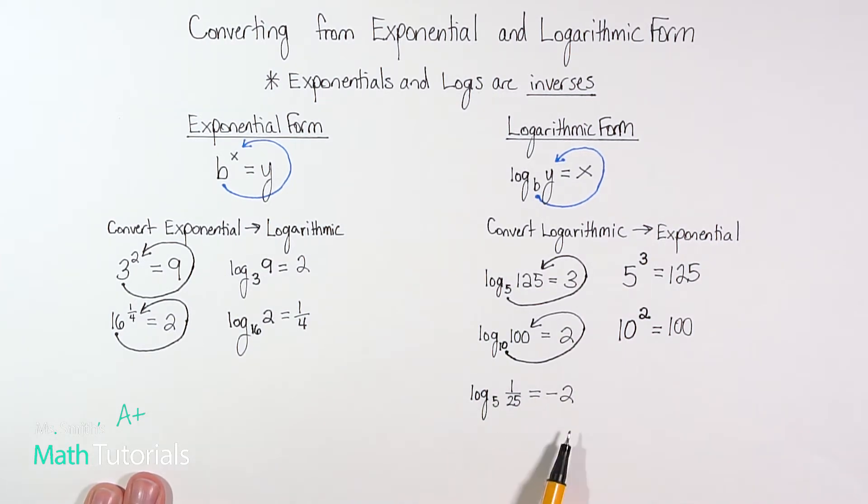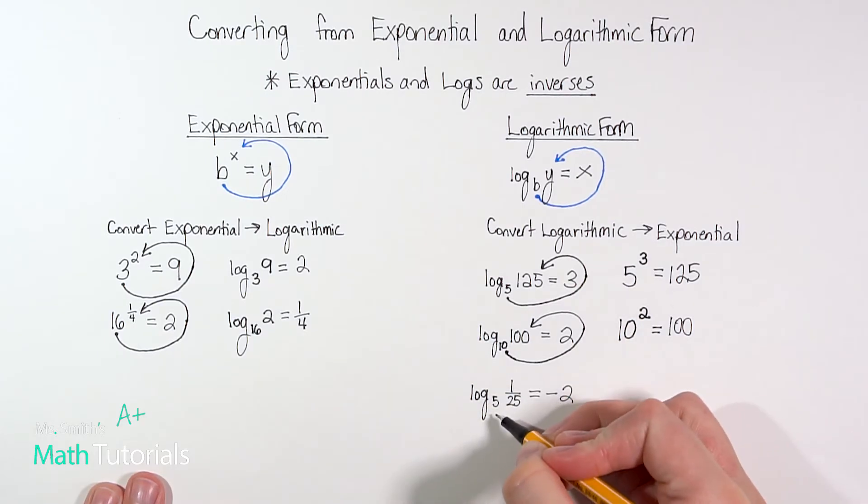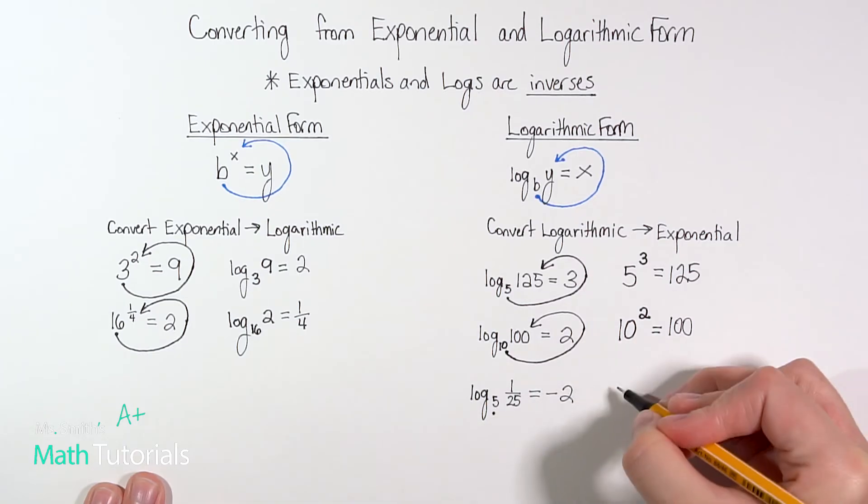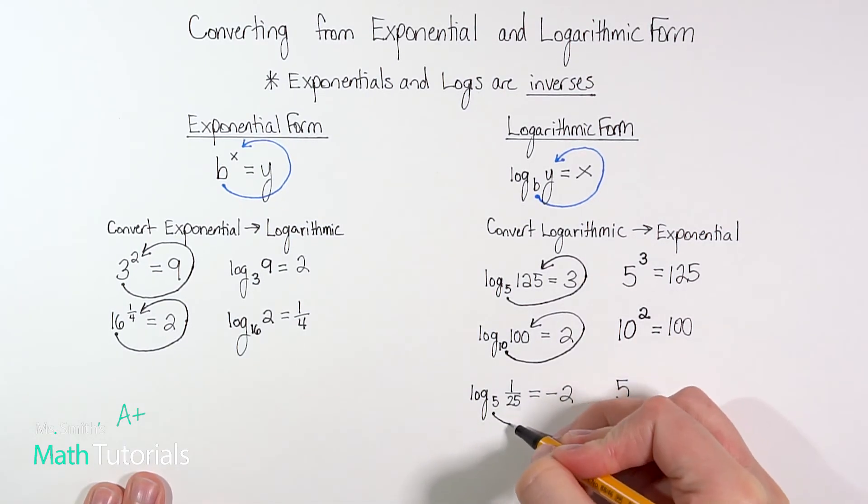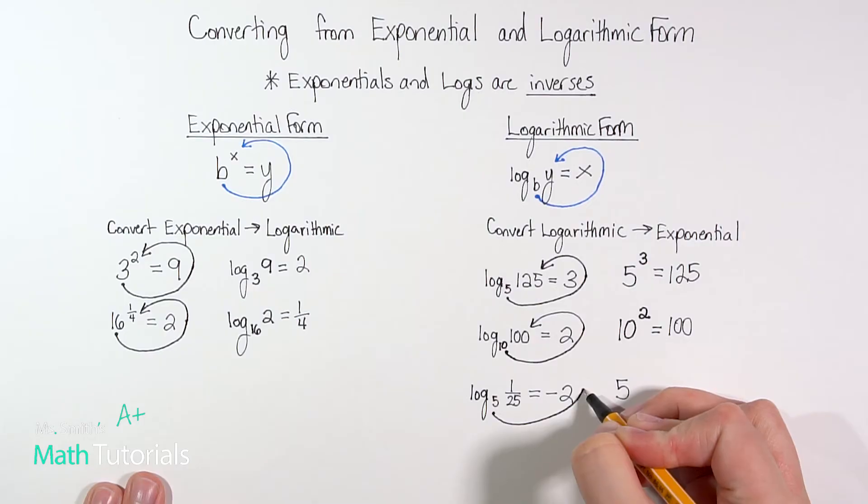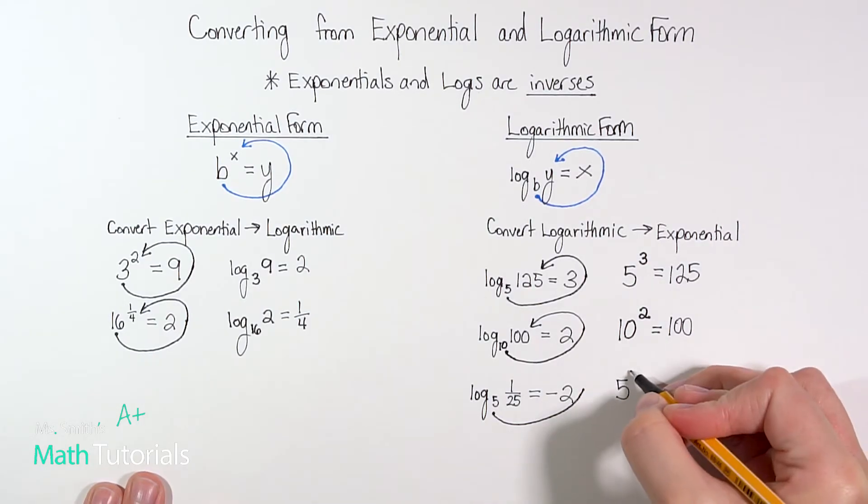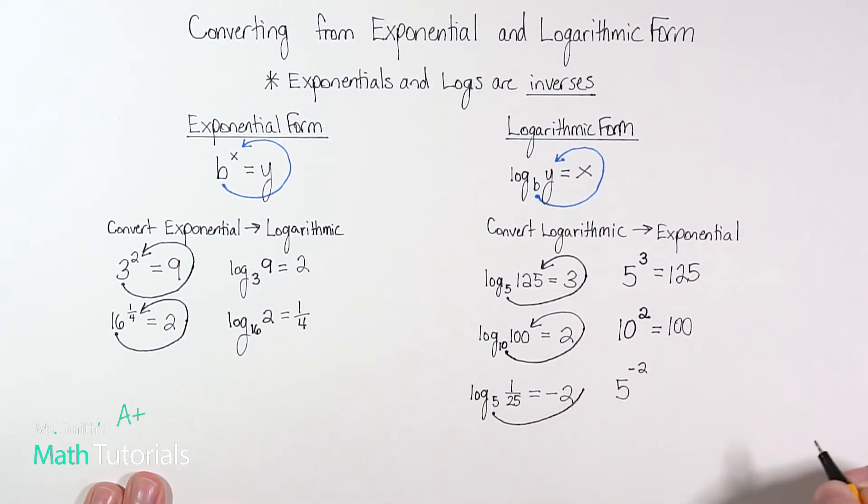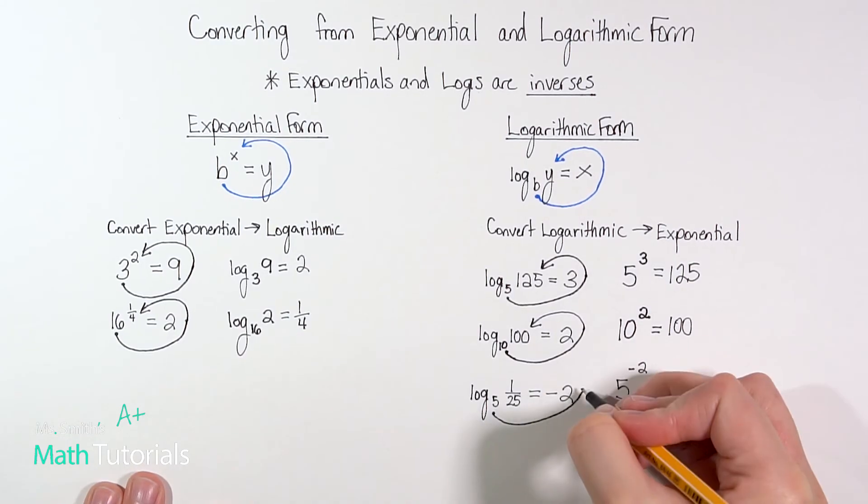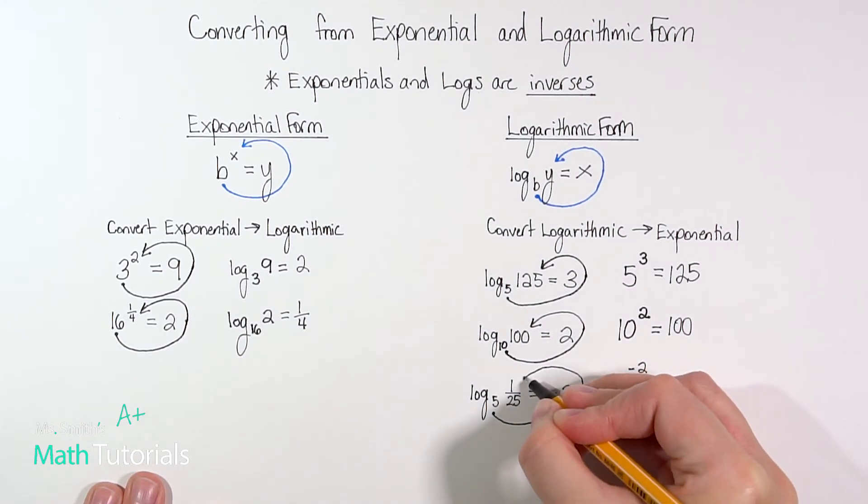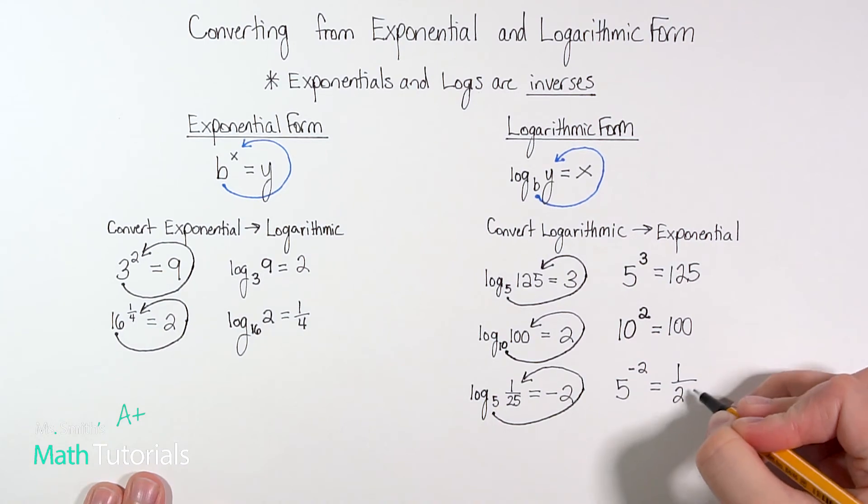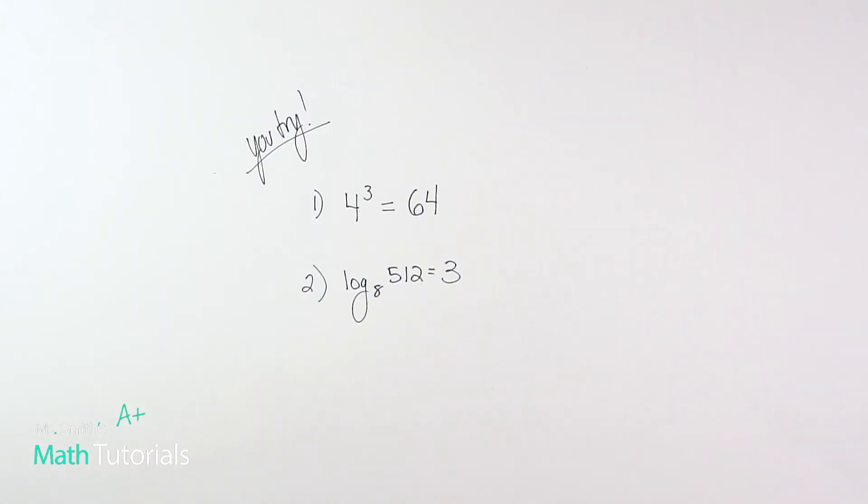And then for this last one, this one looks a little weird just because we've got a fraction thrown in there, but we don't treat it any different. You still follow the same backward C rule. So where do I start at? Where's my leftmost number? Five. So my base is going to be five. When I curve around, what's the next place I hit? Negative two. So I have an exponent of negative two equals, where do I end up? One over 25.